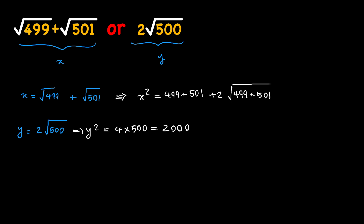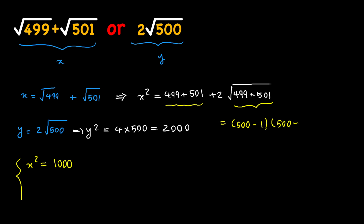So x squared equals 1000 plus two times the square root of 499 times 501. Notice that this product can be written as 500 minus one times 500 plus one, which equals 500 squared minus one. So x squared equals 1000 plus two times the square root of 500 squared minus one, and y squared is simply 2000.